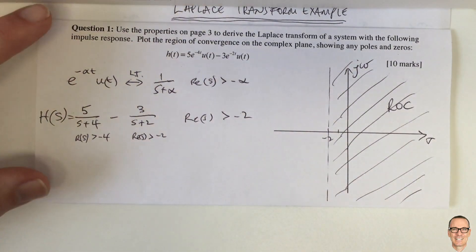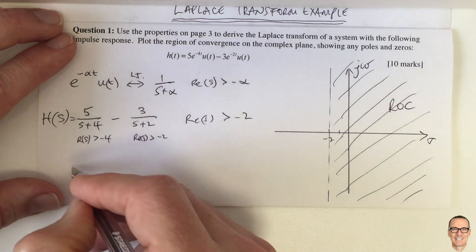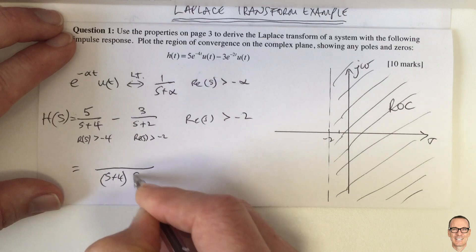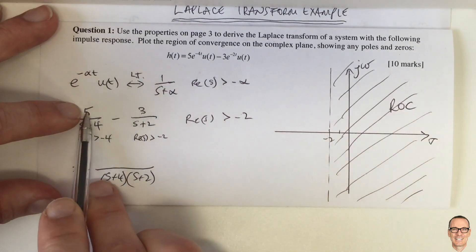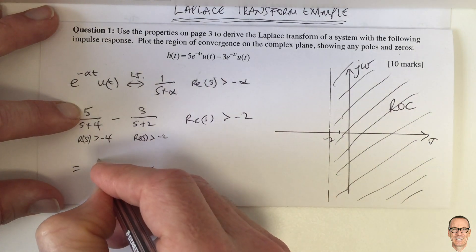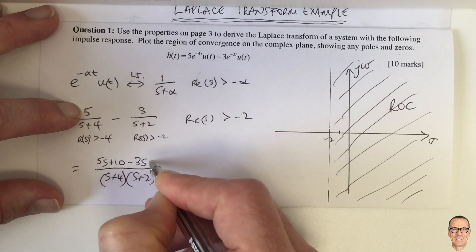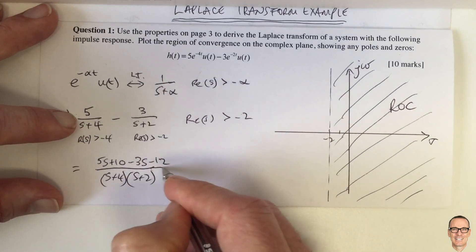We're also asked to plot zeros and poles, so to do that, let's combine these terms here. So we get s plus 4, s plus 2 on the bottom, so we need to multiply 5 by s plus 2, so that's 5s plus 10 minus 3s minus 12, this term here multiplied by there,